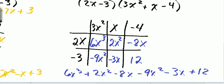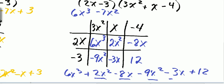I'm going to rewrite this combining like terms. So I have 6x cubed. Then I have 2x squared minus 9x squared, which gives me negative 7x squared. And I have negative 8x minus 3x, which is negative 11x, plus 12.